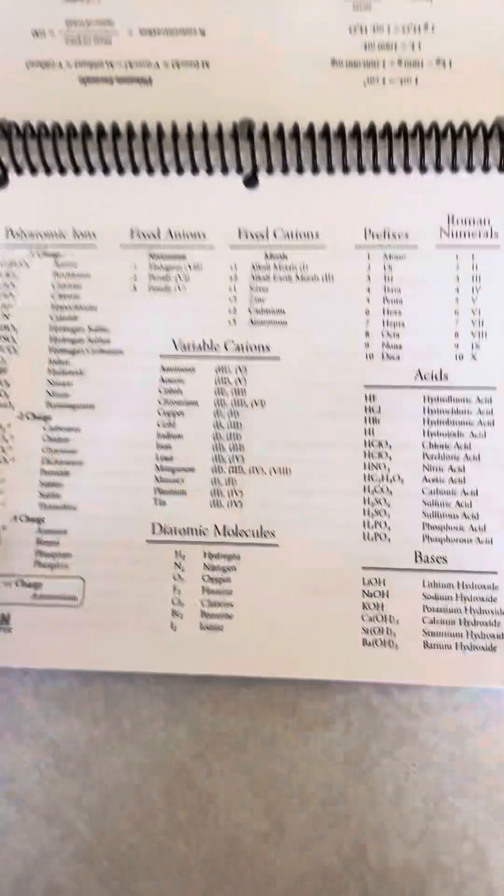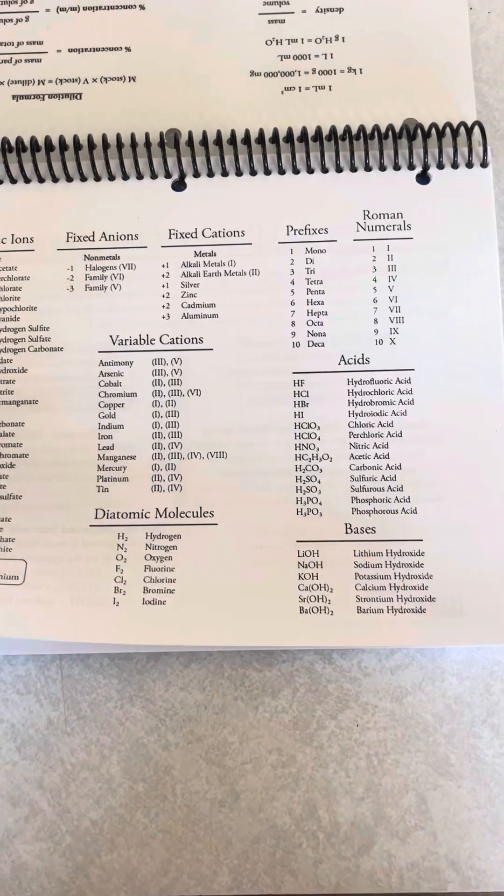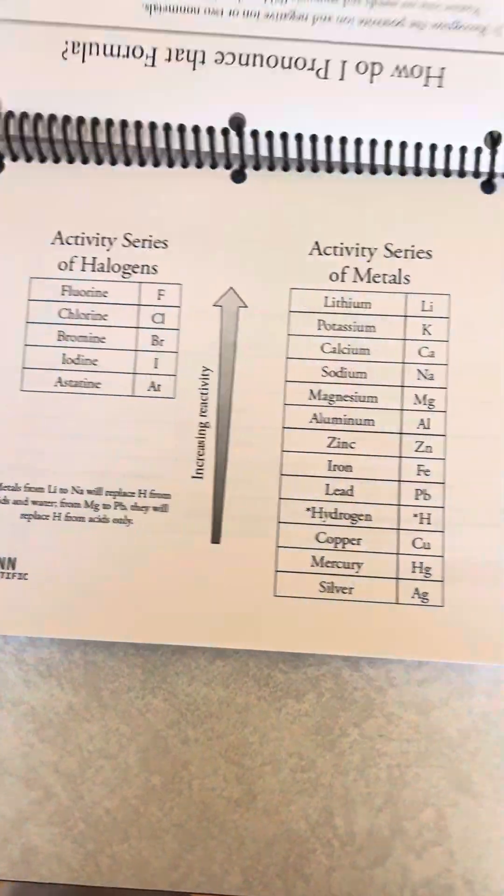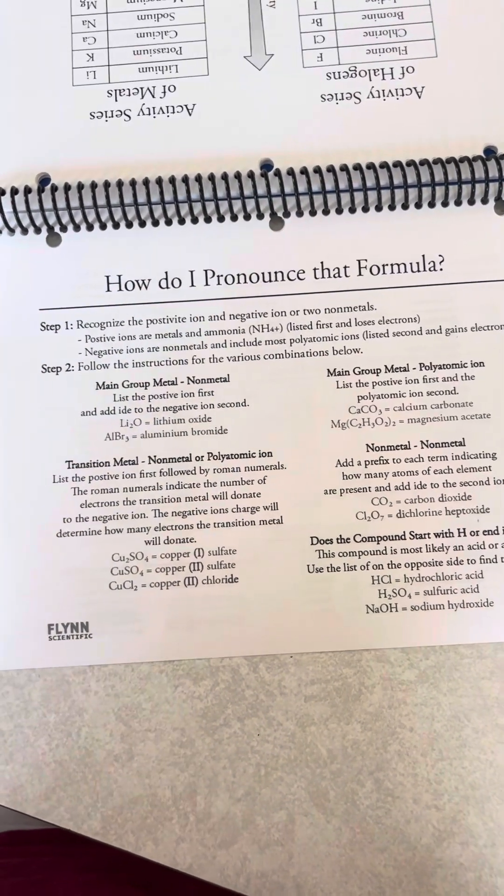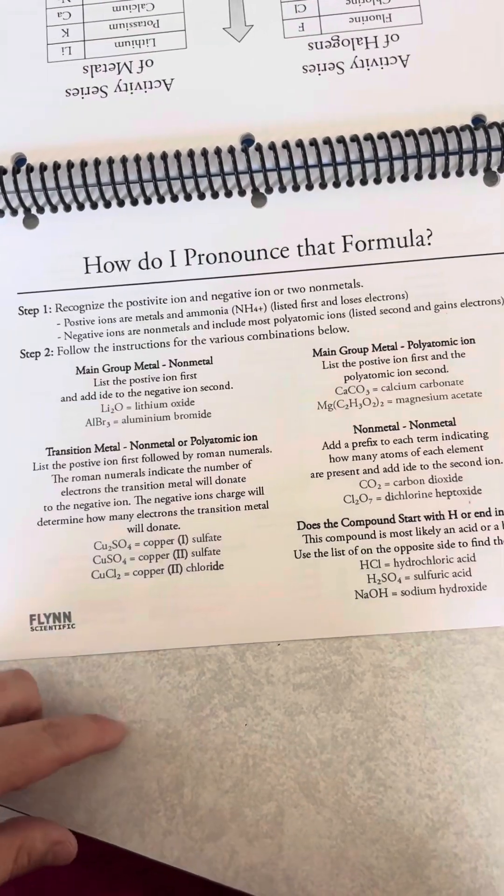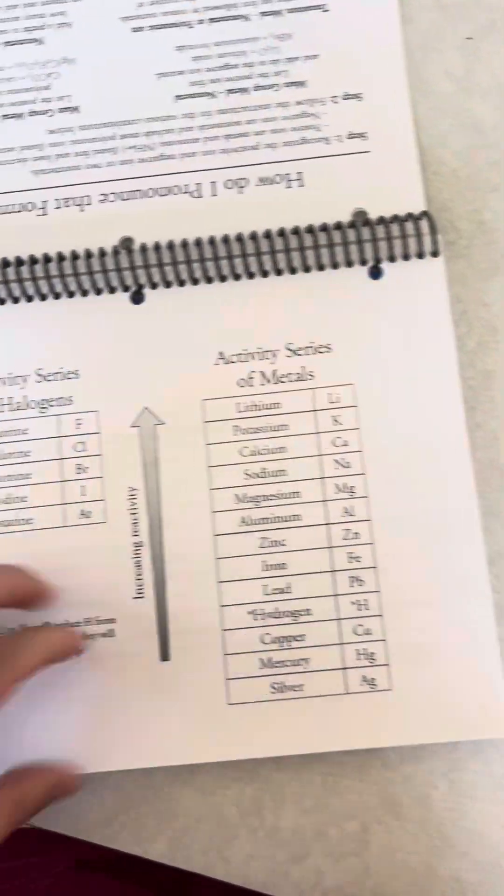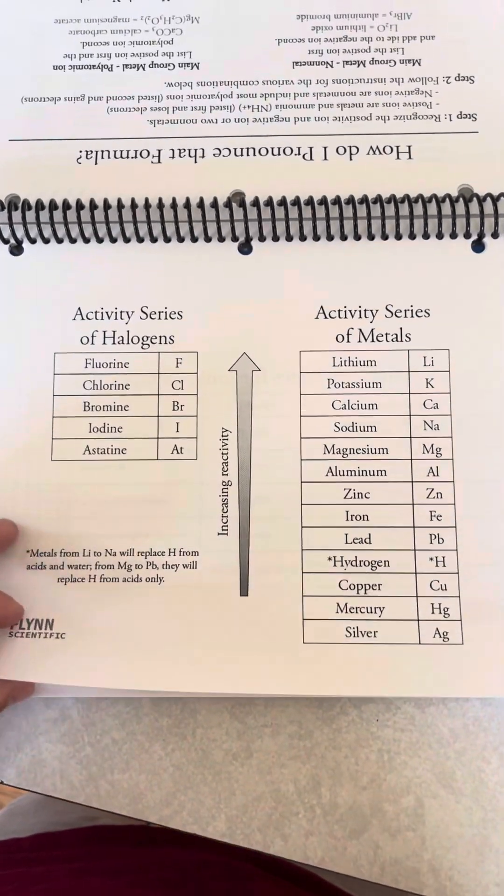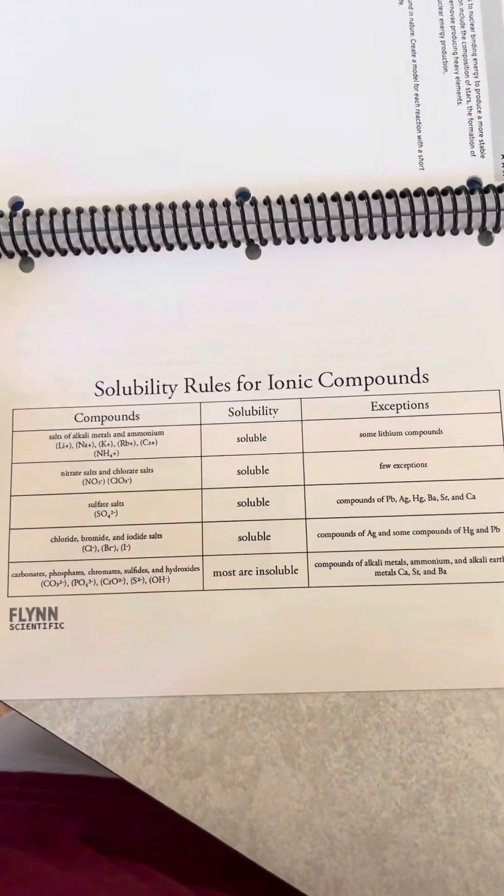I have my common ions that they have to know, acids, bases, Roman numerals. I even have a reference page on how to pronounce the formulas. This is just my thought pattern of how to name compounds. And so kids use these references all the time if they need help on a test. These are allowed on the test, these reference sheets. I have the activity series for halogens and metals. And then lastly, solubility rules.